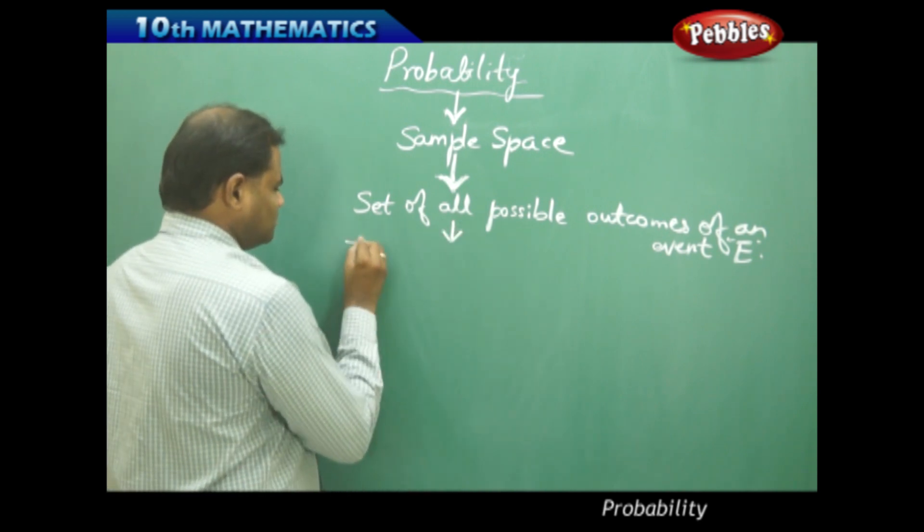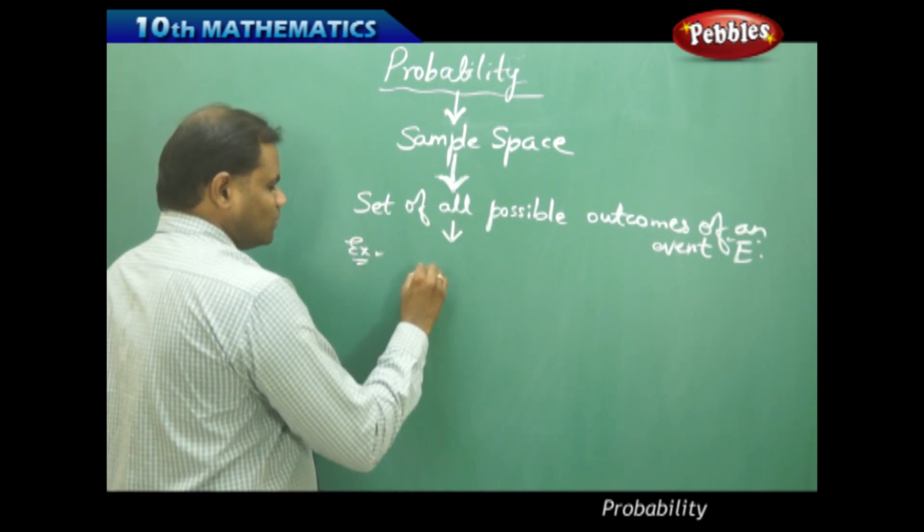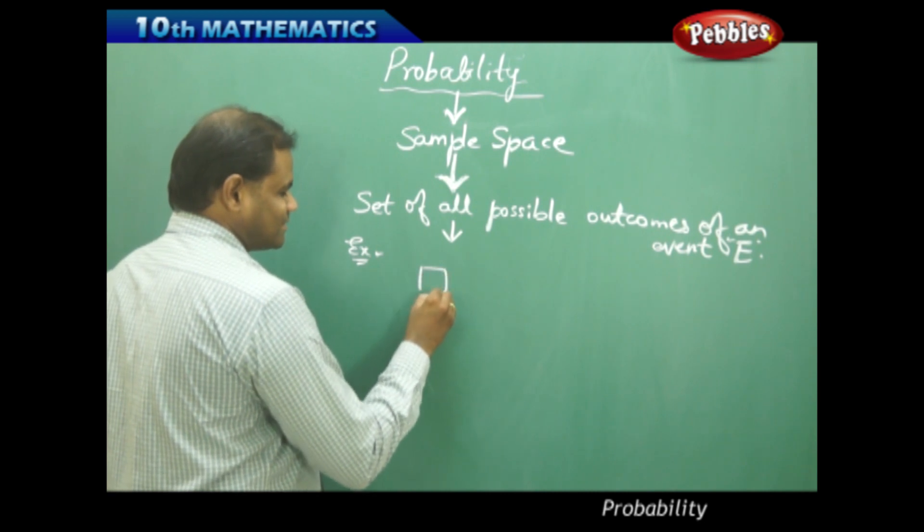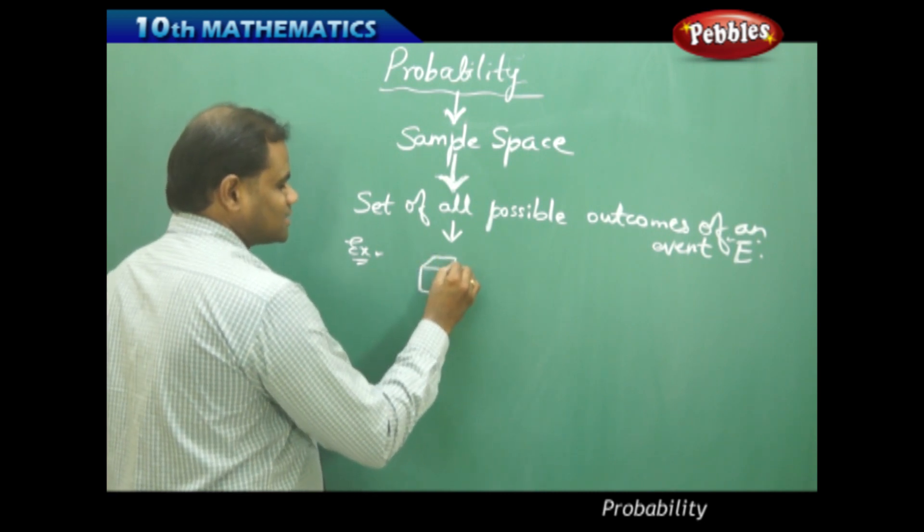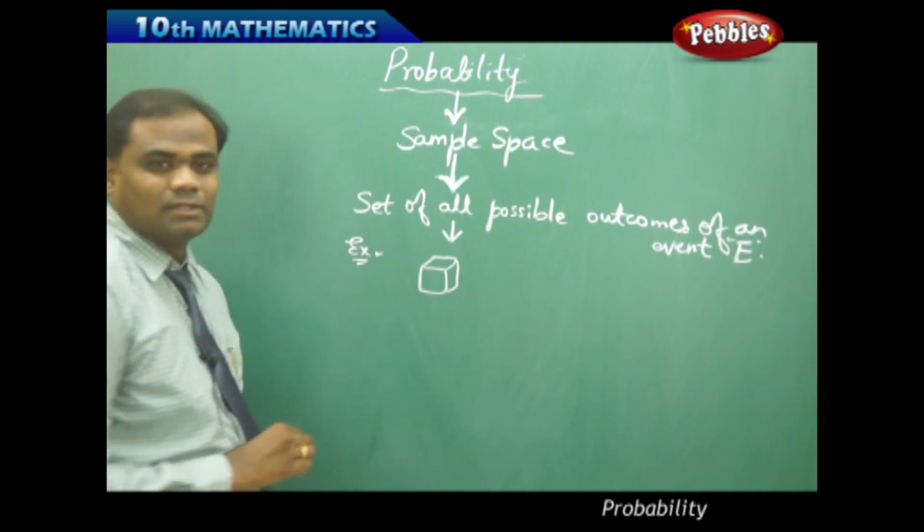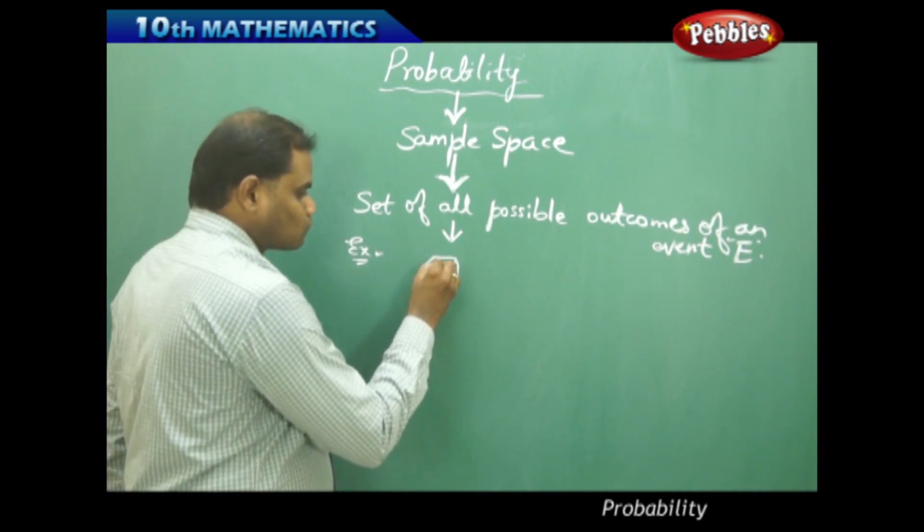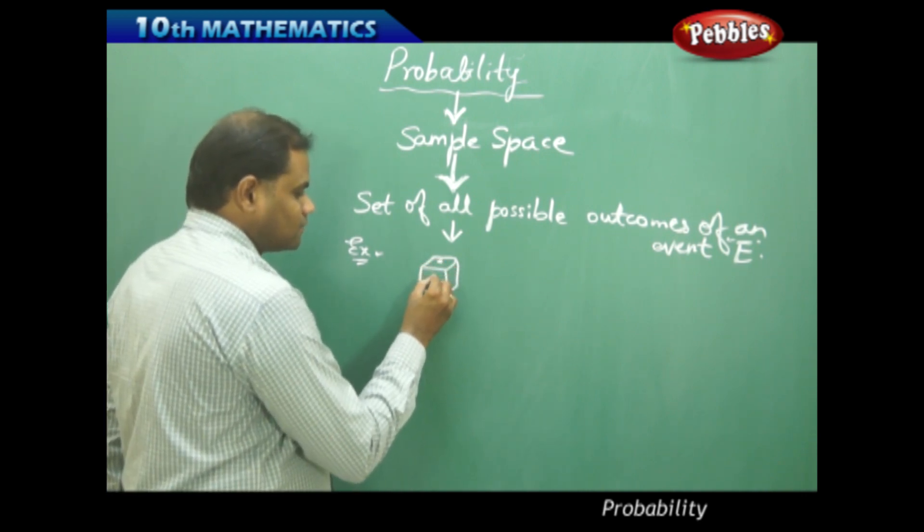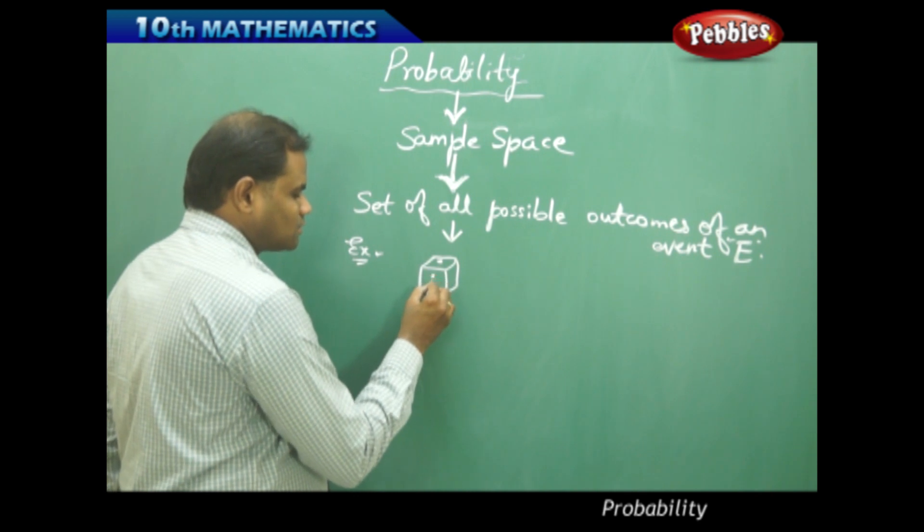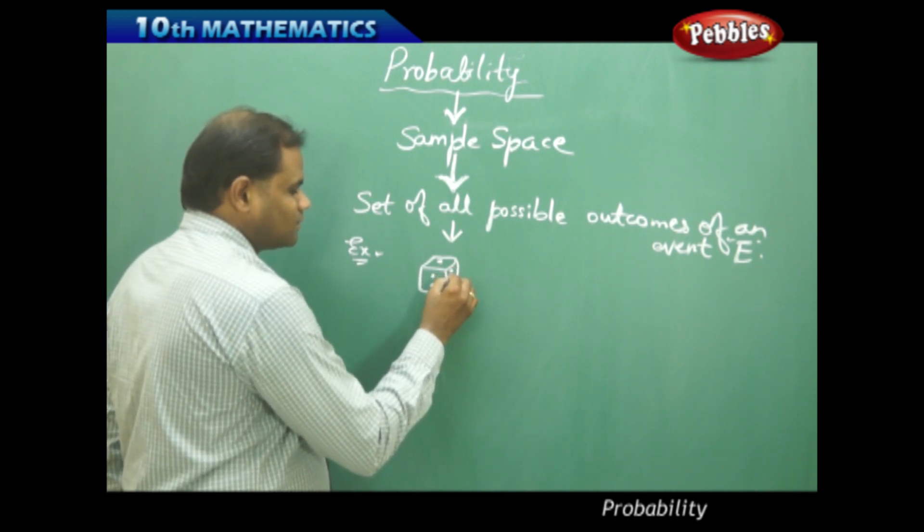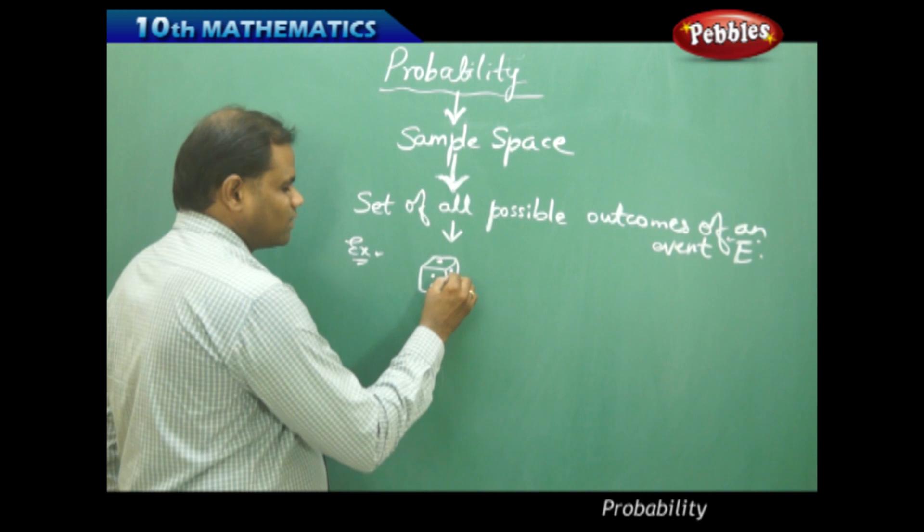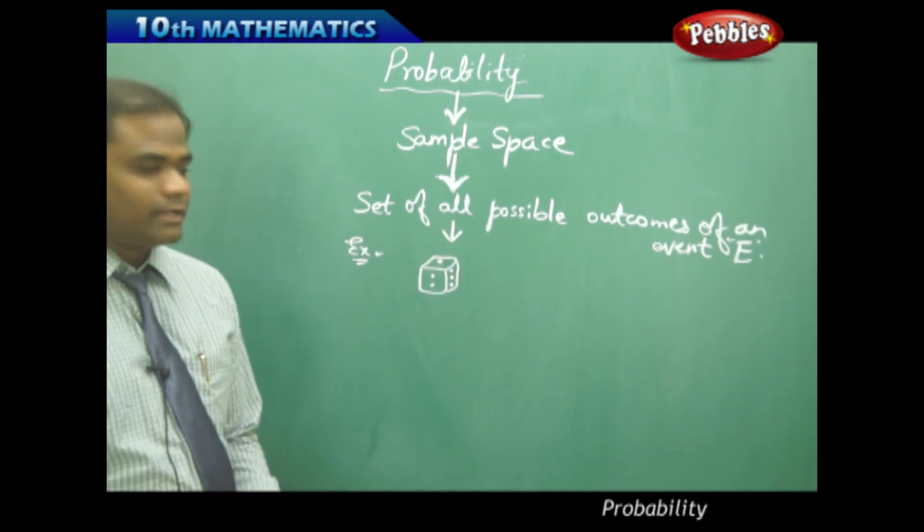For example, we all know what a dice is. Usually we use this dice in playing a game where you have one dot, then two dots, then three dots or four, five, six, etc. So in this dice,